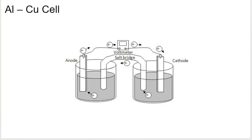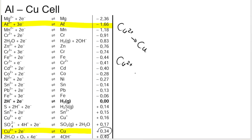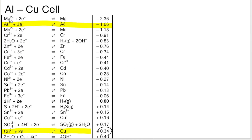Let's do another one — the aluminium-copper cell. Your first step is to go to the table and figure out what is being oxidized and what is being reduced. Looking at Table 4B, you can find the aluminium half reaction and, further down, the copper half reaction. There are multiple copper reactions on the table, but we use the 0.34 V one most of the time, because it represents Cu²⁺ ions being reduced to solid copper. When in doubt, use the 0.34 copper.